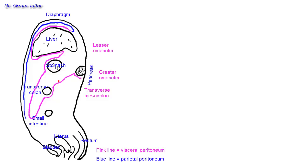The mesentery is a piece of peritoneum extending from the transverse colon to the posterior abdominal wall. As the peritoneum covers the pancreas it is still visceral peritoneum, but as it reaches the posterior abdominal wall it becomes parietal peritoneum — I'll continue it in blue — covering the posterior abdominal wall and then reflected at the level of the transverse process of L2 vertebra.